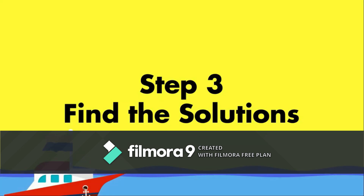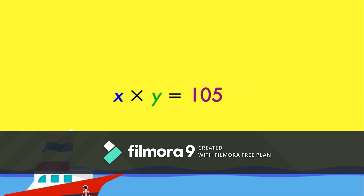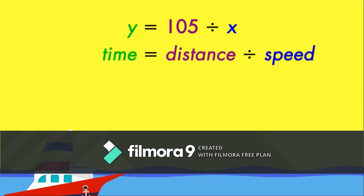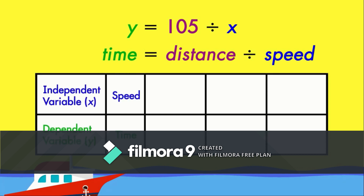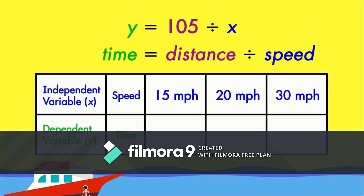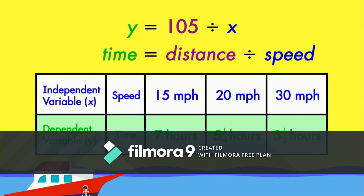To find the possible solutions, rewrite the equation so Y is on one side and X is on the other. Then draw a table to record results. Let's find how long it will take the boat to go 105 miles at three different speeds: 15, 20, and 30 miles per hour. Solving for three different values of Y, we see that it could take the boat 7, 5 and a quarter, or 3 and a half hours to travel the distance. Notice that whenever you change the independent variable X, the dependent variable Y is affected.